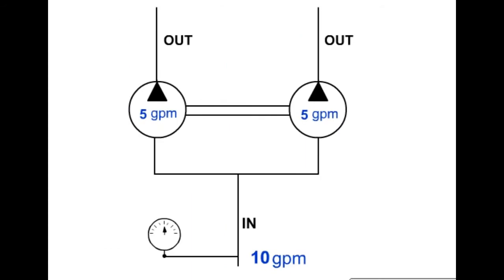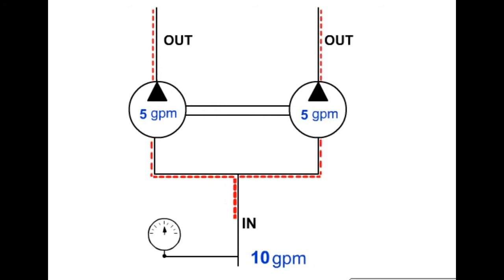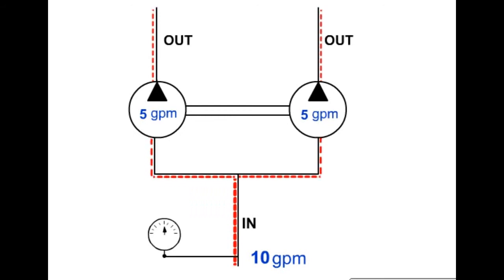The relief valve will also keep the flow divider from blocking flow to other circuits. Gear-type flow dividers can be used to combine return flow in circuits. Most spool flow dividers are not designed to allow reverse flow through them, but there are spool-type combiners and combination divider-combiner units.